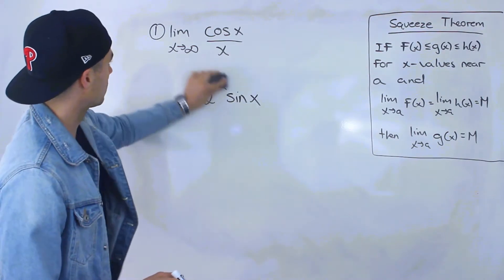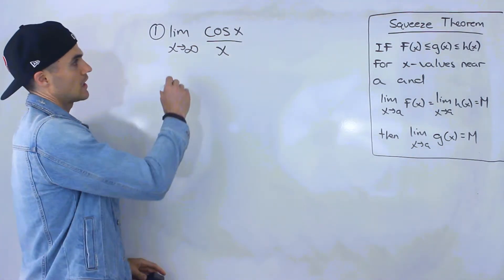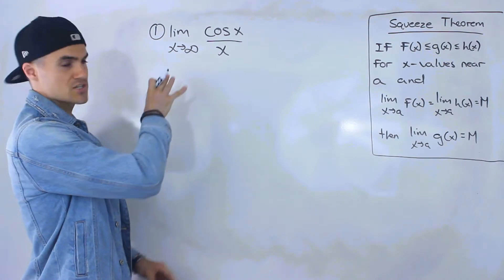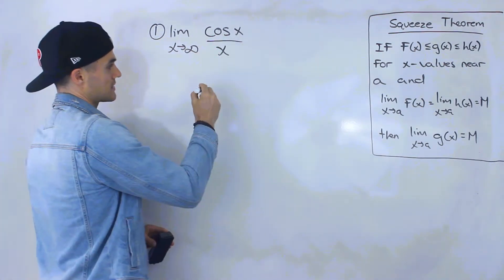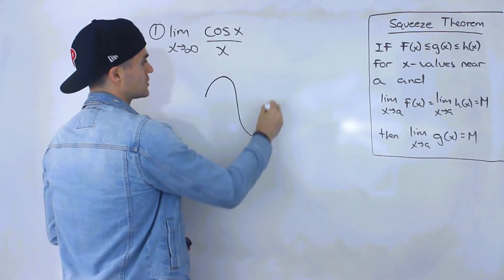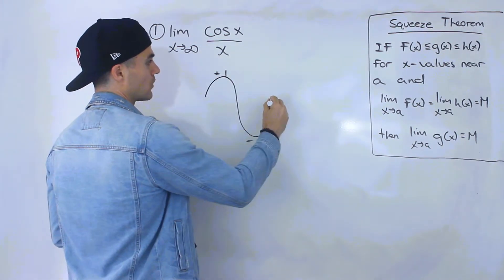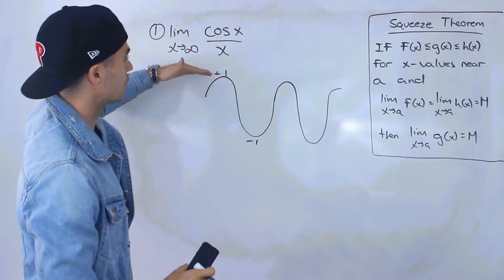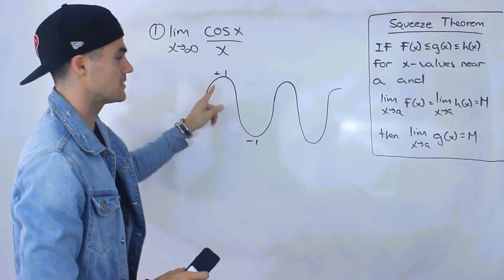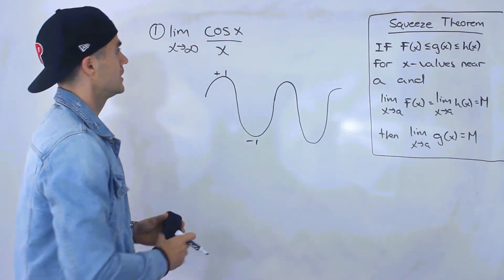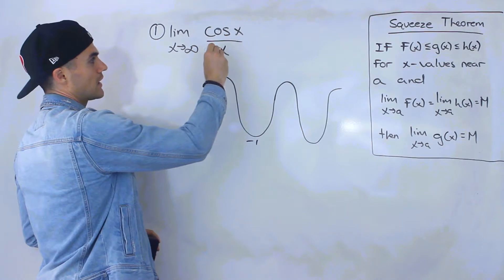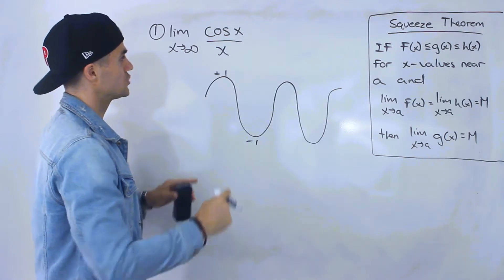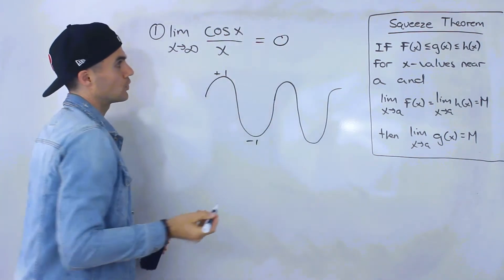Let's start with limit number one: the limit as x approaches infinity of cos(x) all over x. When you look at this from a higher level, we know cos(x) is always going to be fluctuating between positive one and negative one as x approaches infinity. So this value in the numerator is never going to be above one or below negative one. But notice that this denominator, as x goes to infinity, is going to keep getting larger and larger, so this limit is going to go to zero.